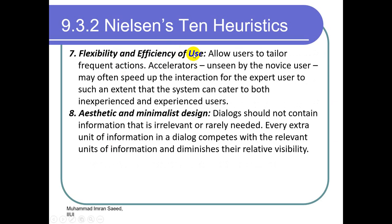Number seven: flexibility and efficiency of use. We allow frequent users shortcut options. Allow users to tailor frequent actions using accelerators — Control+C, Control+V, Control+Z, macros, special keys like F1. Novice users are unaware of these, but expert users know all these accelerators and perform tasks with better efficiency. Inexperienced users normally learn these options as well when they use the system frequently.